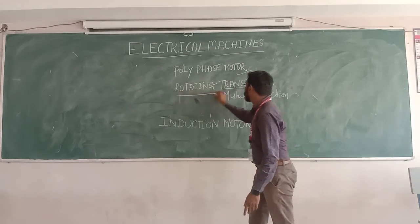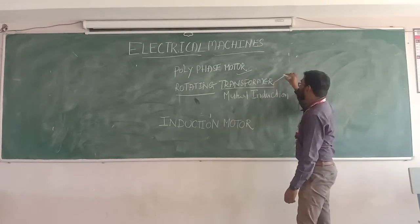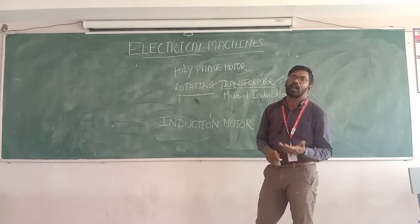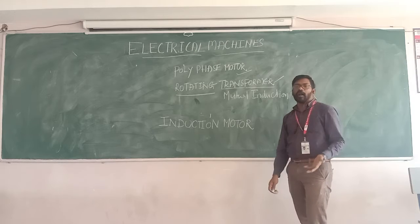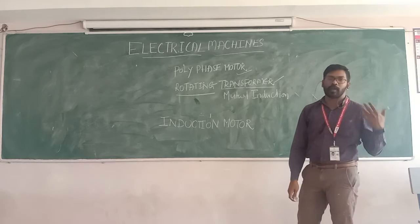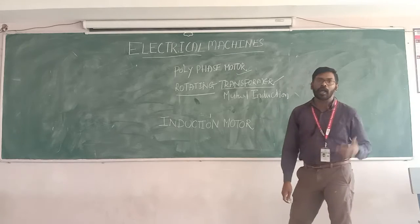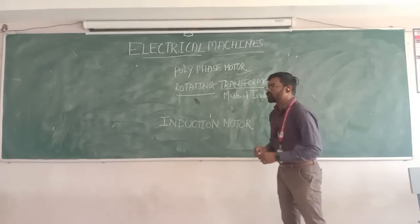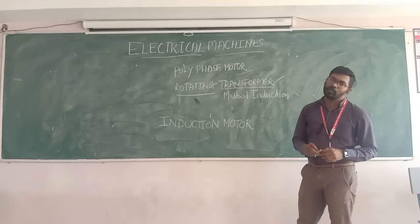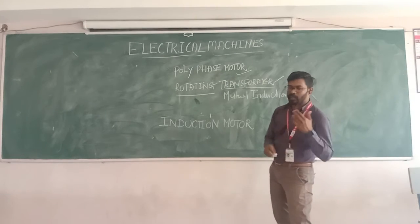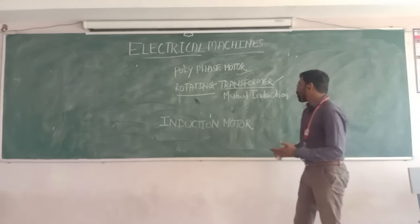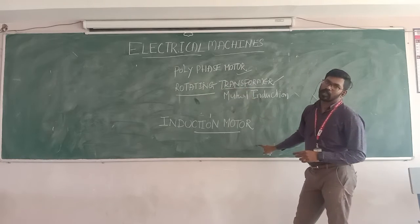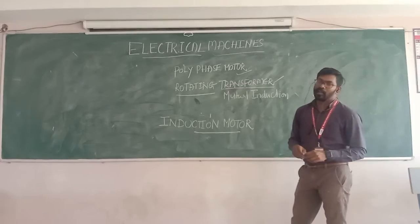Why is it called a rotating transformer? A transformer is a completely static piece of apparatus — it does not consist of any rotating parts. A transformer consists of two completely static windings: primary winding and secondary winding wound on two limbs. But the induction motor is a rotating machine consisting of two parts — the stator and the rotor — where the stator is stationary and the rotor is rotating. Since it is a rotating machine operating on the transformer principle, it is called a rotating transformer.